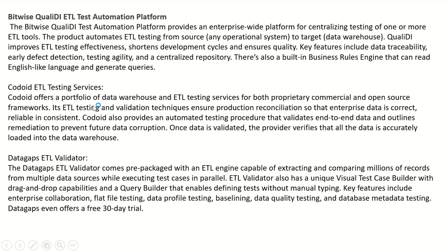The second ETL testing tool is Codoid ETL Testing Services. Codoid offers a portfolio of data warehouse and ETL testing services for both proprietary commercial and open source frameworks. Its ETL testing and validation techniques ensure production reconciliation so that enterprise data is correct, reliable, and consistent. Codoid also provides an automated testing procedure that validates end-to-end data and outlines remediation to prevent future data corruption. Once data is validated, the provider verifies that all data is accurately loaded into the data warehouse.